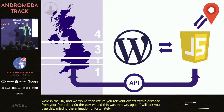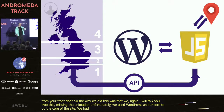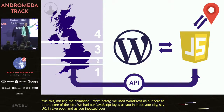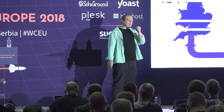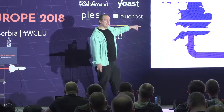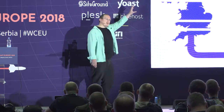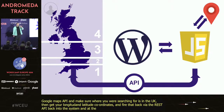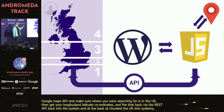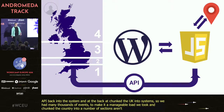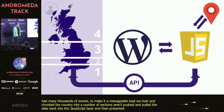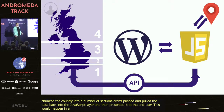We used WordPress as our core and had a JavaScript layer. As you input your city — let's say Liverpool — we would fire a request out to the Google Maps API, make sure the location was in the UK, get your longitude and latitude coordinates, then fire those back via the REST API into the back of the system. In the back, we'd chunked the UK into sections to make it a manageable load, then pulled that data back into the JavaScript layer and presented it to the end user — all happening in a matter of milliseconds.